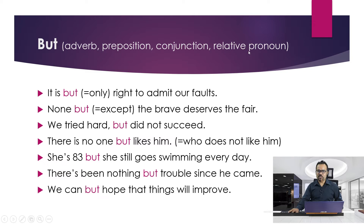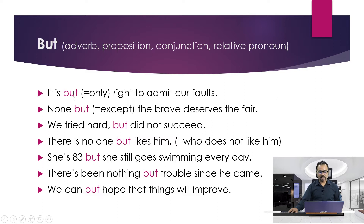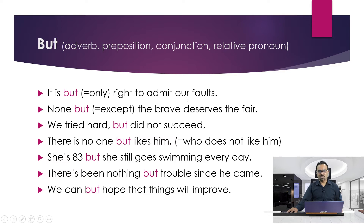Look at the first example: 'It is but right to admit our faults.' In this example, 'but' means 'only' — it is only right, this is the only way to admit our faults. So in this example 'but' is an adverb because it indicates 'only'. The word 'it' is a pronoun, 'is' is a verb, 'but' is an adverb, 'right' is an adjective, 'to admit' is a verb, 'our' is a determiner, and 'faults' is a noun.